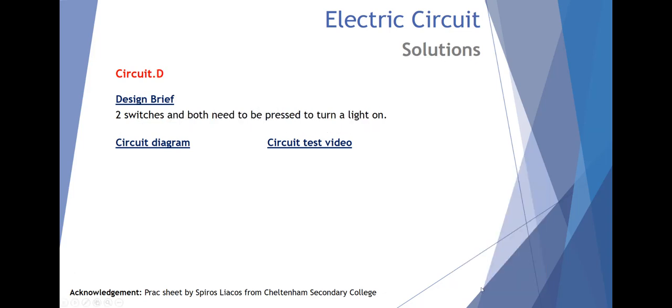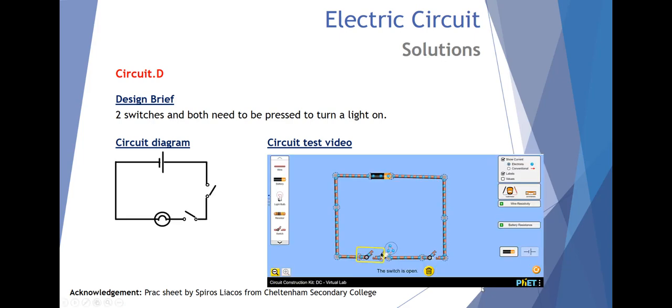Circuit D, two switches and both need to be pressed to turn on a light. Switch one and switch two, both need to be pressed to turn on the light.